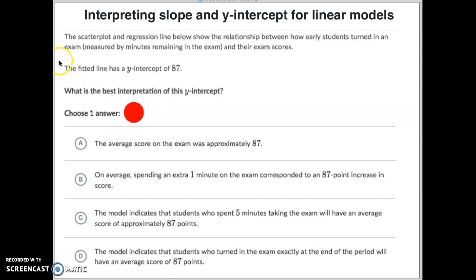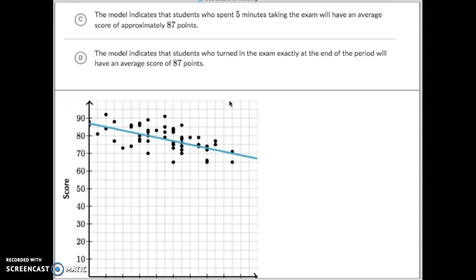The number one thing you got to do is you have to read this portion of it right there. The fitted line has a y-intercept of 87. So we need to interpret what that y-intercept is standing for. What is the best interpretation for that right there? So the y-intercept is 87, what's the best interpretation? And then they give you a graph.